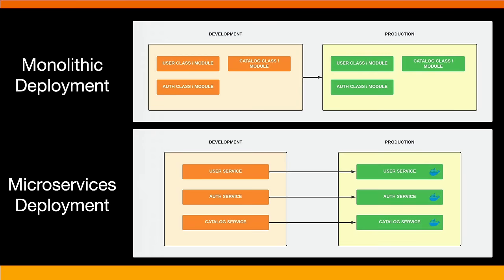When it comes to deployment, monolithic applications are deployed as a single unit — the infrastructure is much simpler and so is the entire process, but it can be problematic with really large projects. If you only need to update a small part of the application, you still have to redeploy the entire thing. With microservices, you can deploy each service independently, which makes it easier to scale and maintain. You can also use containerization technologies like Docker to package each service with its dependencies, making it easy to deploy and run services in any environment.